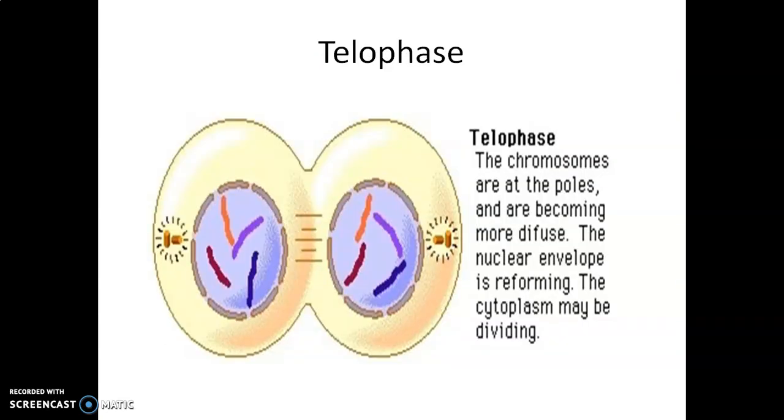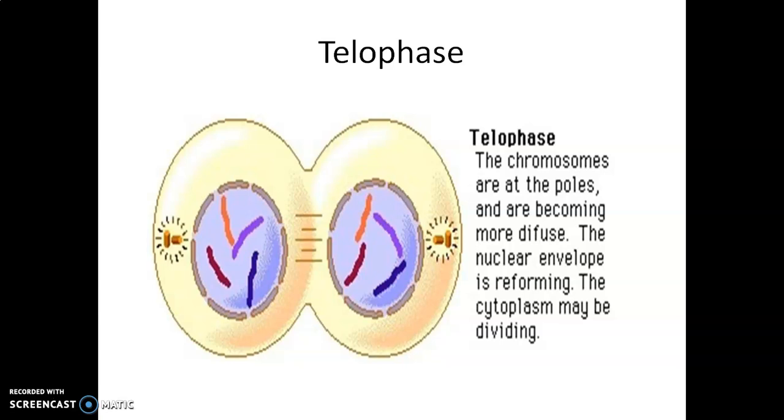And the last one, telophase. At the beginning of the final stage of karyokinesis, the chromosomes that have reached their respective poles, the chromosome clusters at opposite spindle poles and their identities are lost. The nuclear envelope develops around the chromosome clusters at each pole forming two daughter nuclei. So cleavage happened here. So this is the cleavage of a nucleus.